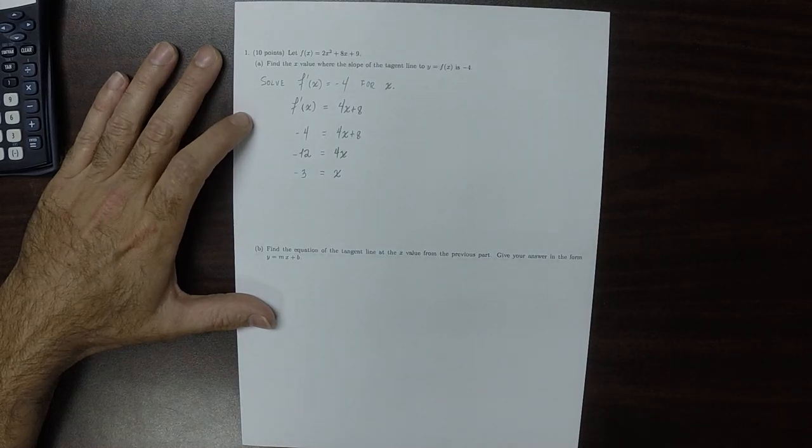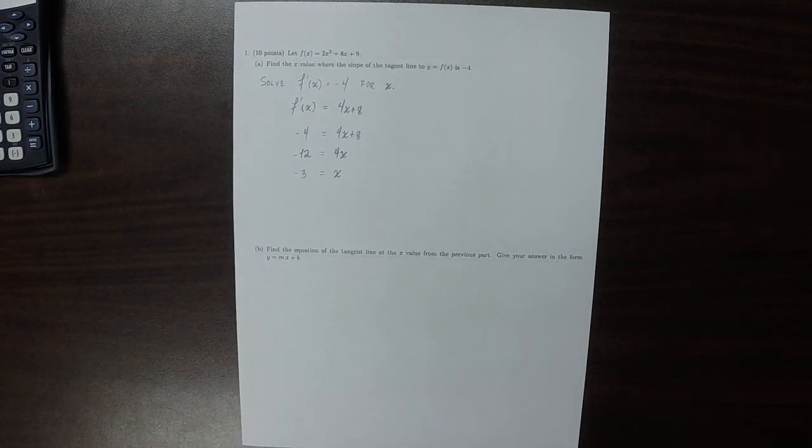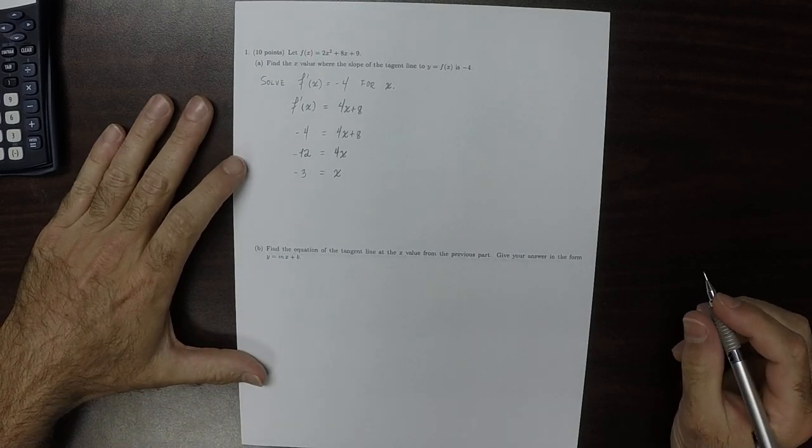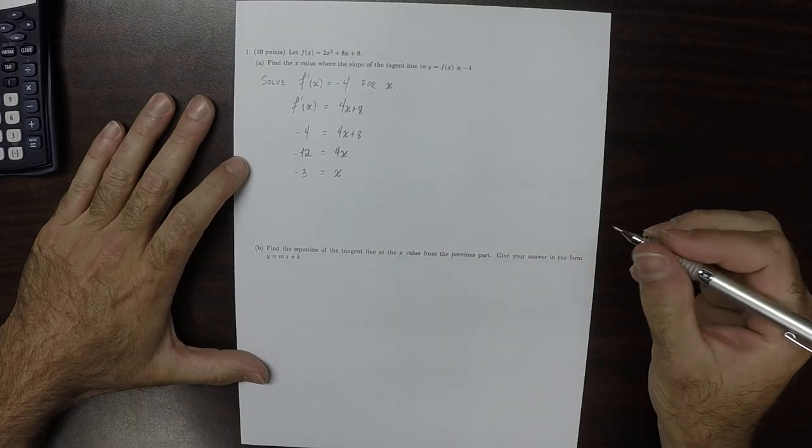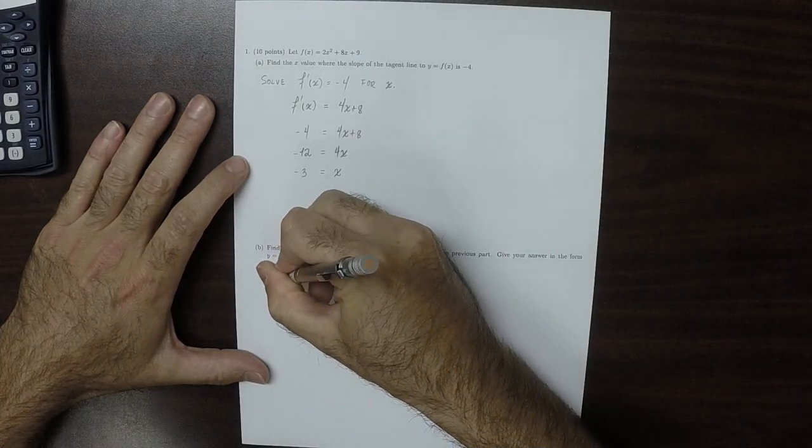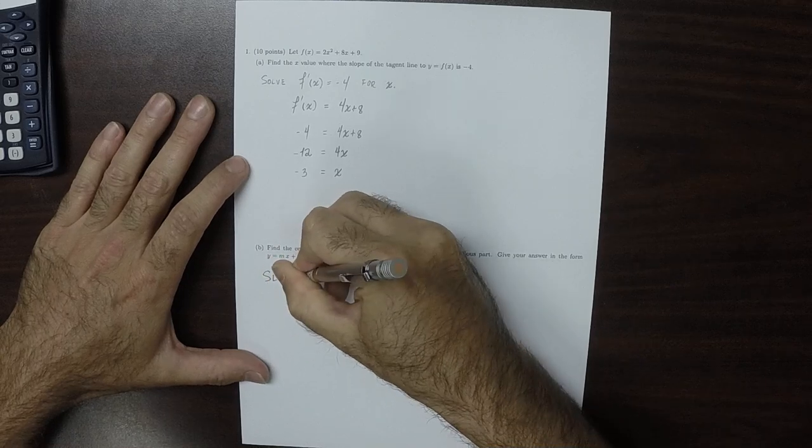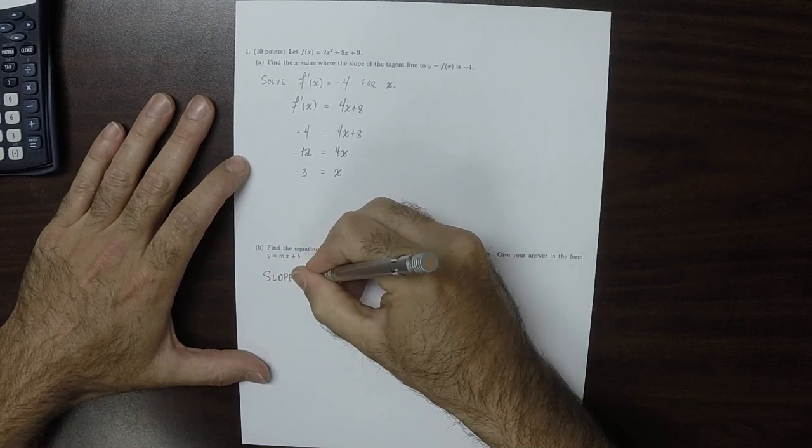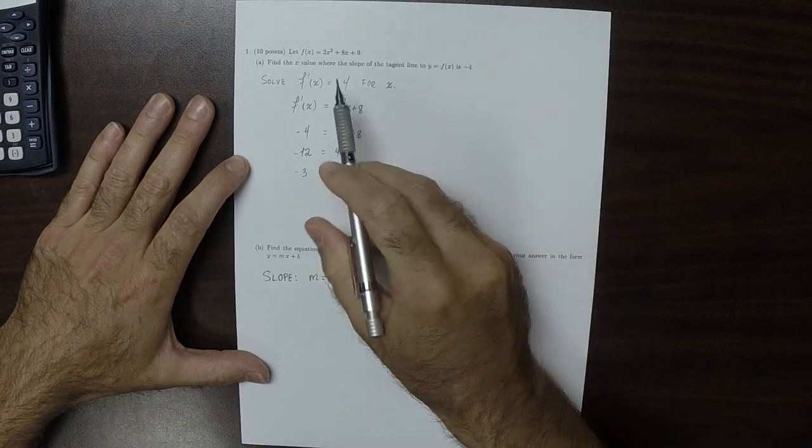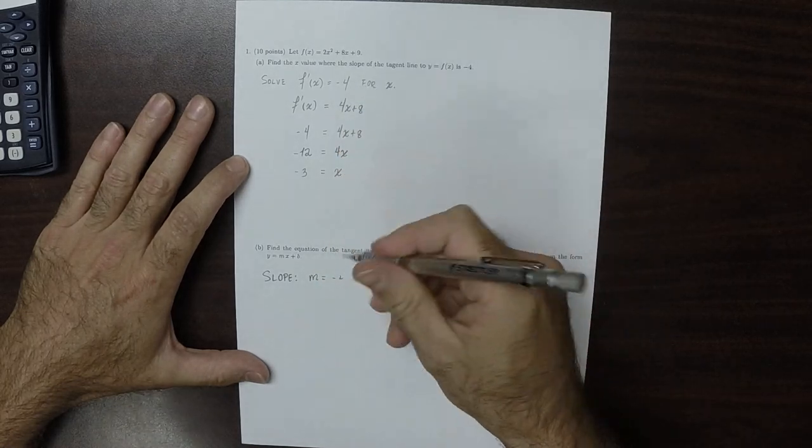So that's the x value. Now find the equation of the tangent line. We already know that the slope that we're looking for is m equal to negative 4. So the slope of the tangent line is negative 4.